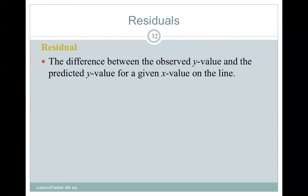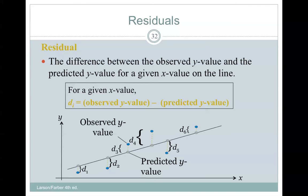A residual is the difference between the observed y value and the predicted y value for a given x value on the line. Here's the formula. We take the observed value and subtract the predicted value. And then here are residuals as we talked.